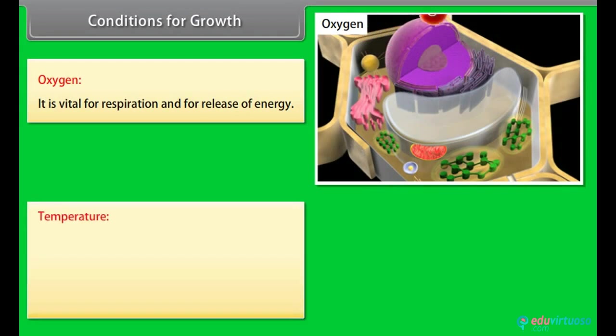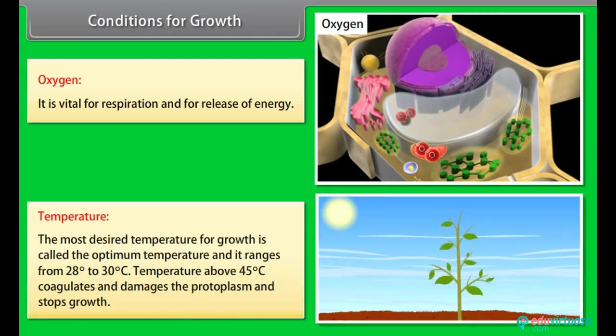Temperature. The most desired temperature for growth is called the optimum temperature and it ranges from 28 degrees to 30 degrees Celsius. Temperature above 45 degrees Celsius coagulates and damages the protoplasm and stops growth.